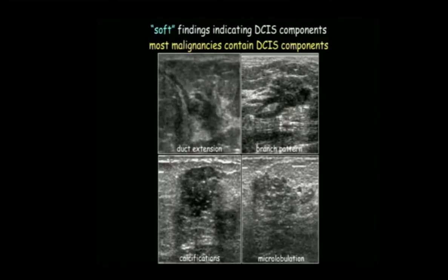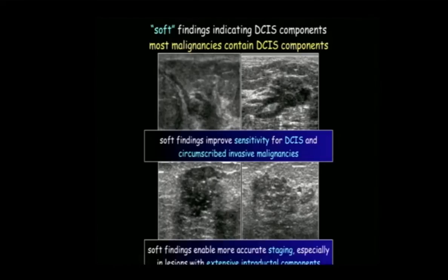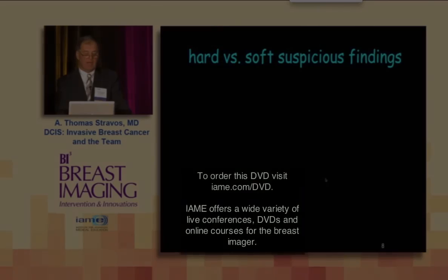Then you have microcalcifications inside a mass, and microlobulations. These are really the key findings of carcinoma in situ. Microlobulations inside the mass are critical. By using these soft findings, we improve our sensitivity for pure carcinoma in situ in circumscribed cancers, and we can stage mixed invasive and carcinoma in situ lesions better with ultrasound.